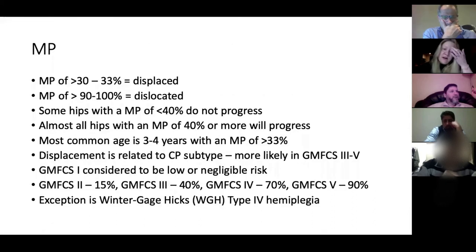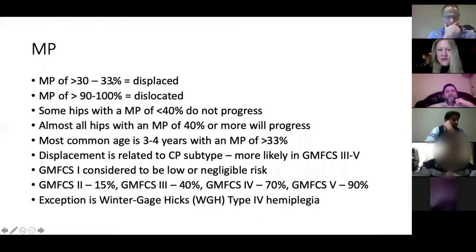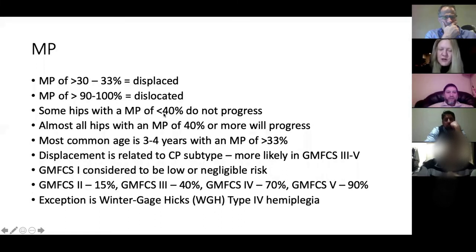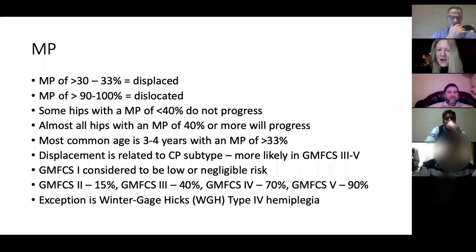A migration percentage of 10% is normal. Between 30 and 33% is described as displaced, and 90 to 100% is described as dislocated. Hips with a migration percentage of less than 40% may not progress, but almost all with 40% or more will progress to dislocation. The most common age for picking this up is around three or four years, with a migration percentage of more than 33%.